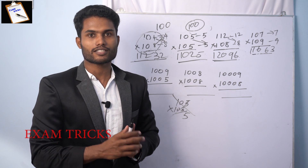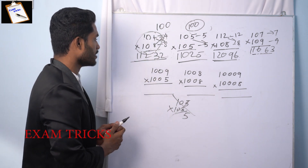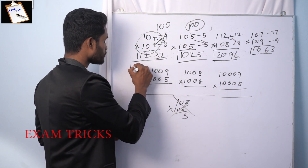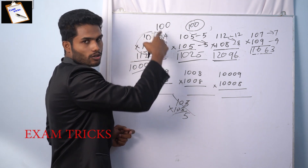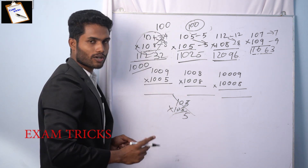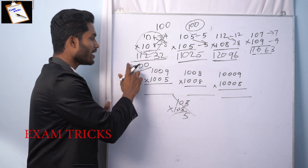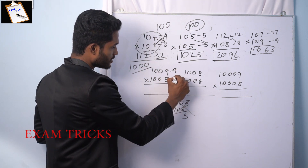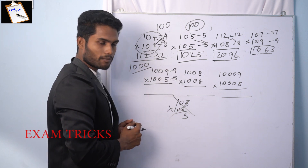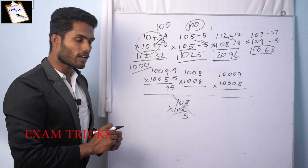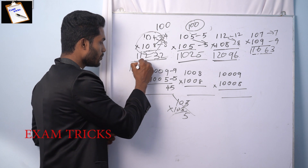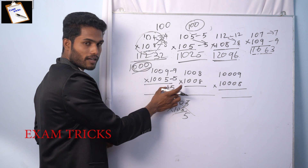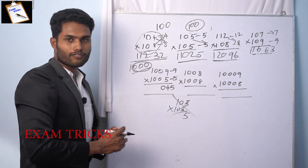If you have numbers close to 1000, you will use the same concept. What is the base? If the number is closer to 1000, we will have base 1000. The method is the same. Difference is 9, difference is 5. Direct multiply: 9 times 5 equals 45. But since the base is 1000 — three digits — 45 becomes 045.